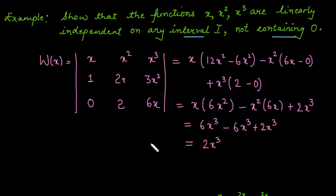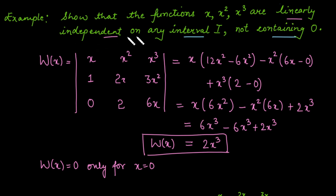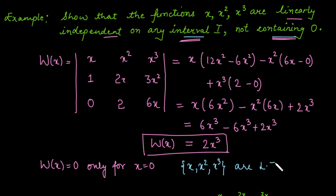We get W(x) = 2x³. This quantity is 0 only at x = 0. So if we remove x = 0 from the interval, W(x) is not equal to 0, and hence the functions are linearly independent. This is exactly what we needed to show: x, x², x³ are linearly independent on any interval i not containing 0.